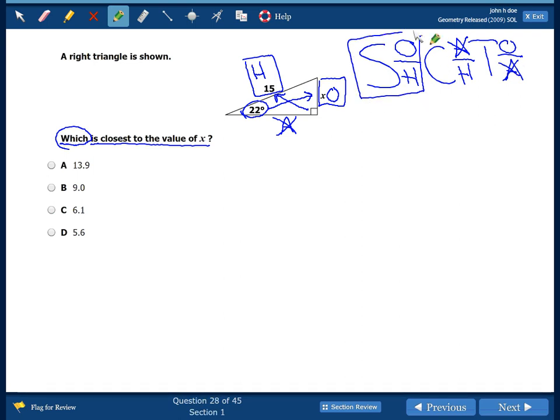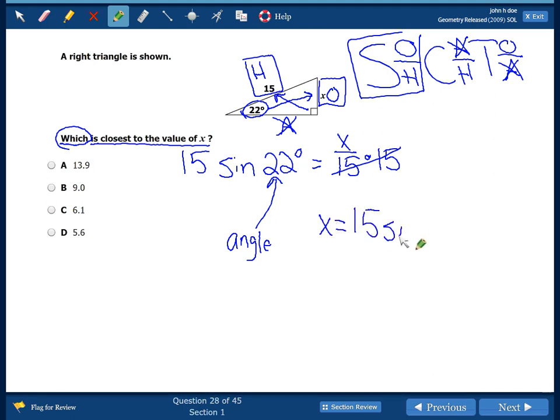So we write sine of 22 degrees. Again, we always put the angle next to sine, cosine, or tangent. It's going to be equal to opposite, x, over 15. Remember, when x is up high, you multiply the 15. So we get x is equal to 15 times the sine of 22 degrees. Once again, if you're doing this on the calculator, make sure that your calculator is in degree mode. So we get x is equal to 5.6.